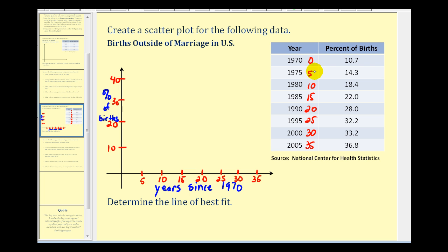So the first point that we'll plot will be zero, 10.7, the second point will be five, 14.3, and so on. Notice how I've already labeled the x-axis, the years since 1970, and labeled the y-axis, percent of births for the percent of births outside of marriage. Now we'll go ahead and plot these points and see what type of function would best fit the data.